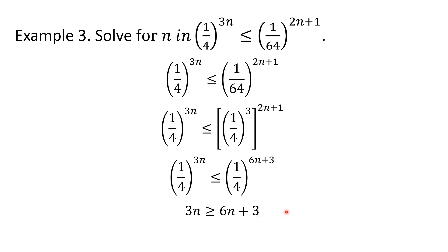We can now solve for n using properties of inequality. Using the addition property of inequality, we add negative 6n to both sides and get negative 3n is greater than or equal to 3. Now using the multiplication property of inequality, we divide both sides by negative 3. We must remember that when multiplying or dividing by a negative number in an inequality, the inequality symbol reverses again. So we go back to less than or equal to, and we get n is less than or equal to negative 1.